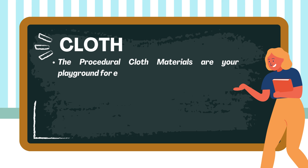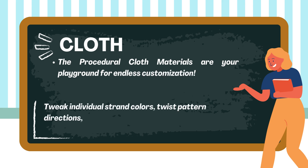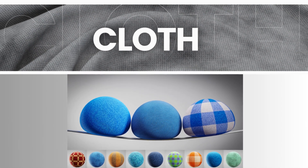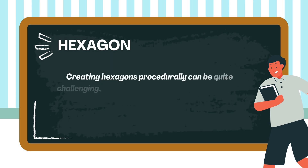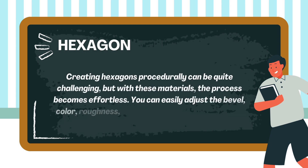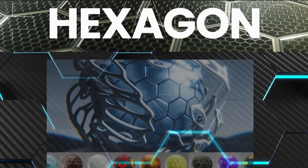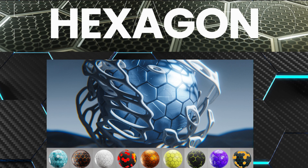The procedural cloth materials are your playground for endless customization — tweak individual strand colors, twist pattern directions, and mix up colors across the material for a uniquely fabulous look. Creating hexagons procedurally can be quite challenging, but with these materials the process becomes effortless. You can easily adjust the bevel, color, roughness, and many other aspects with full control.